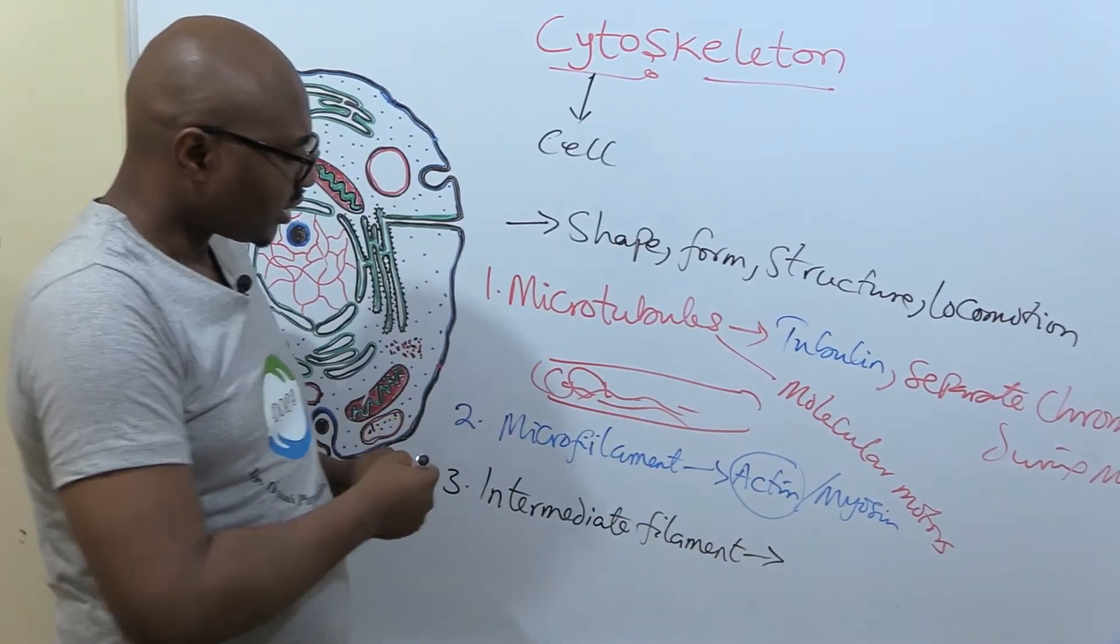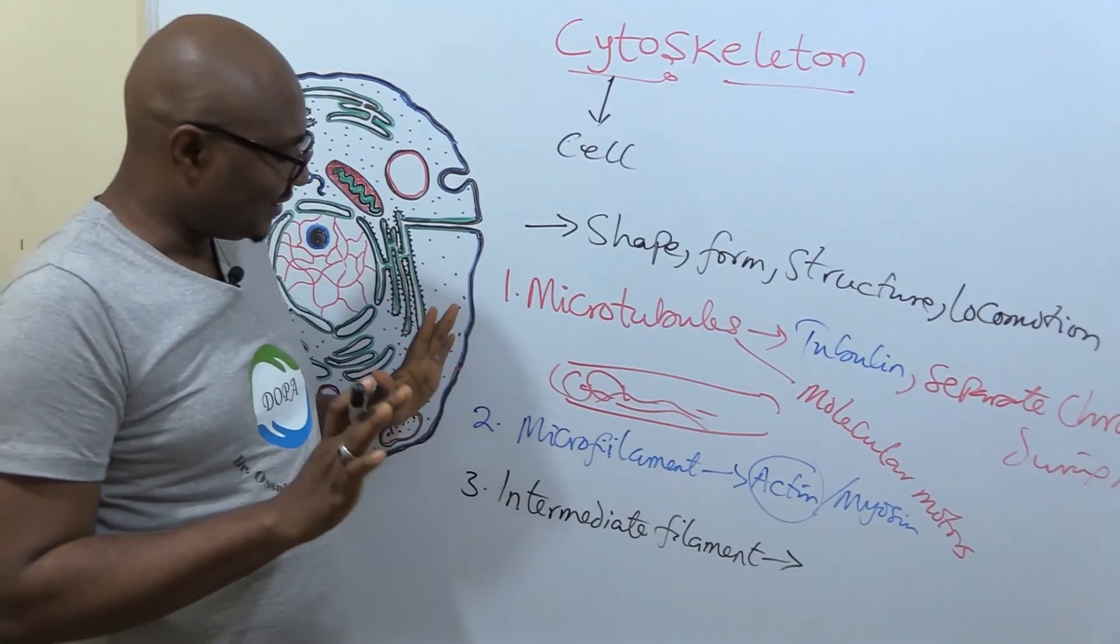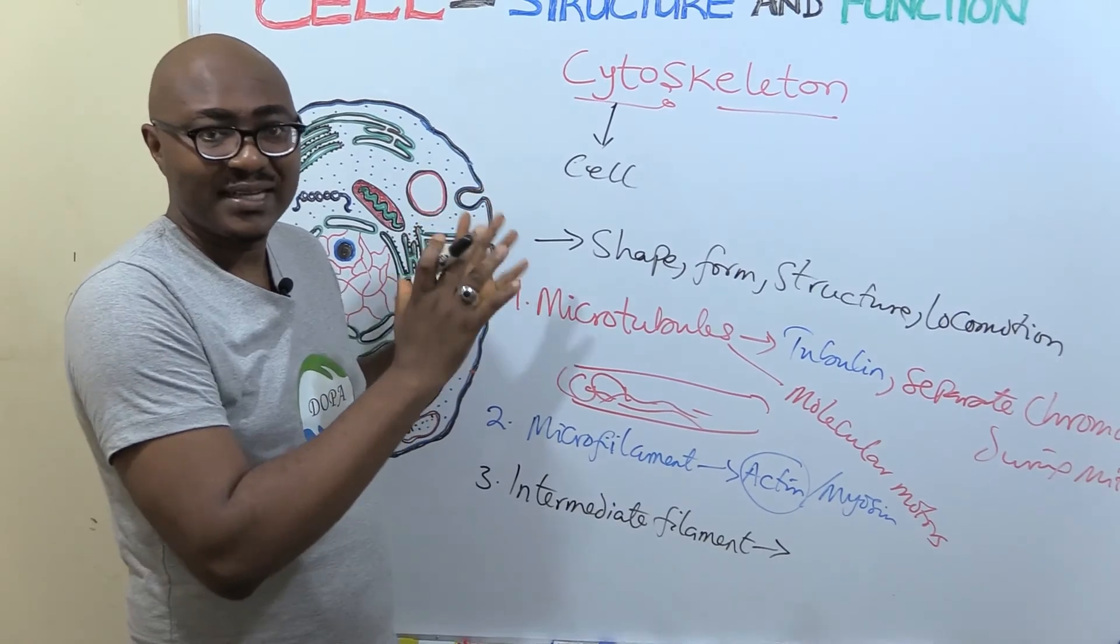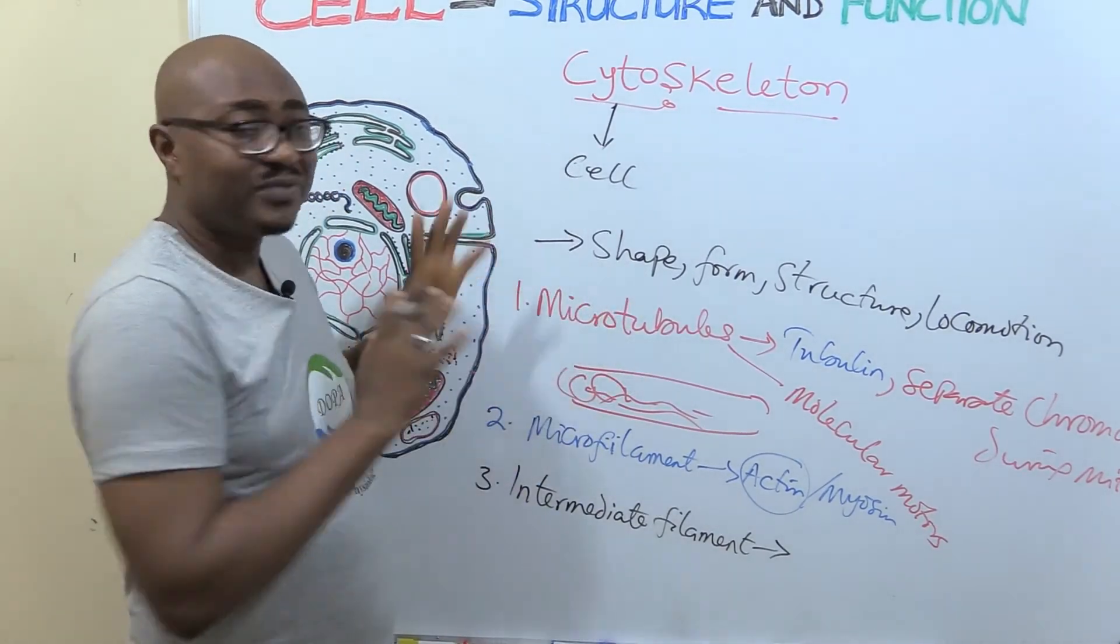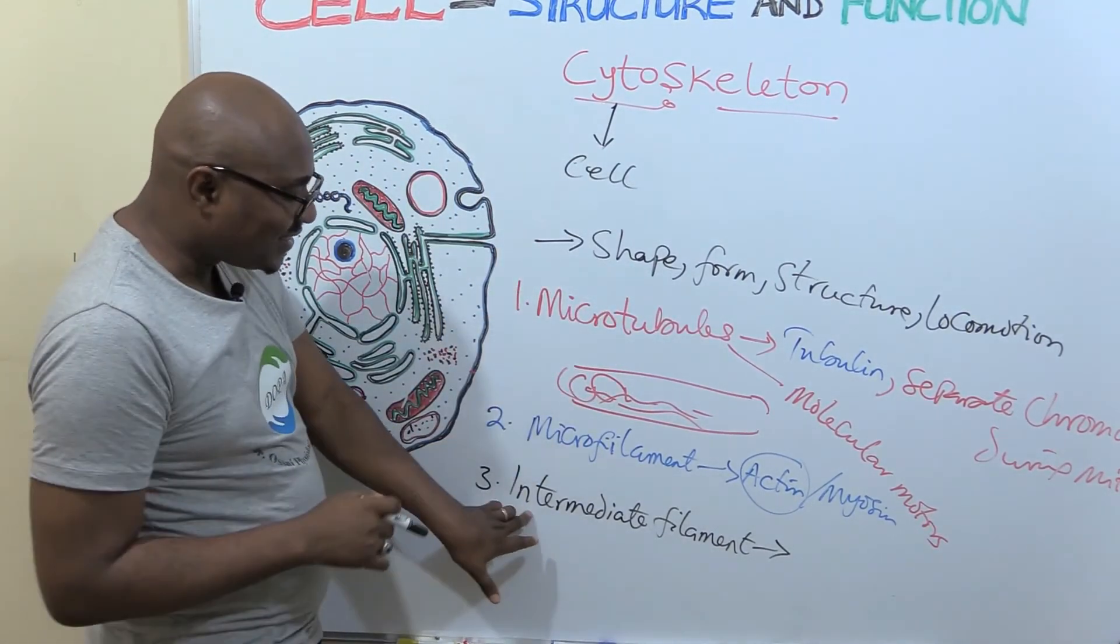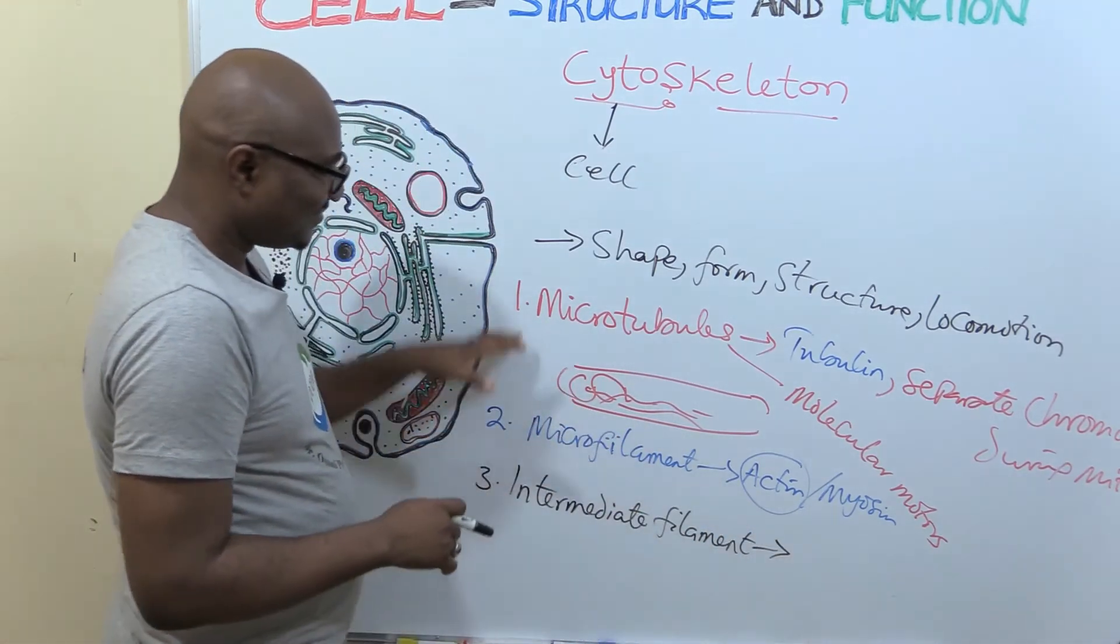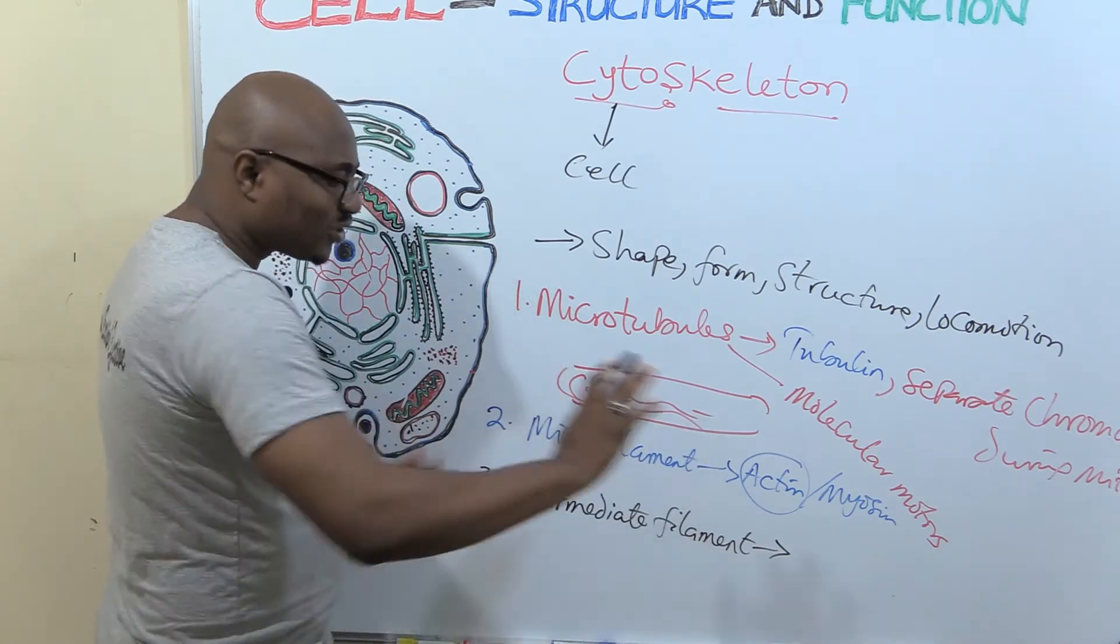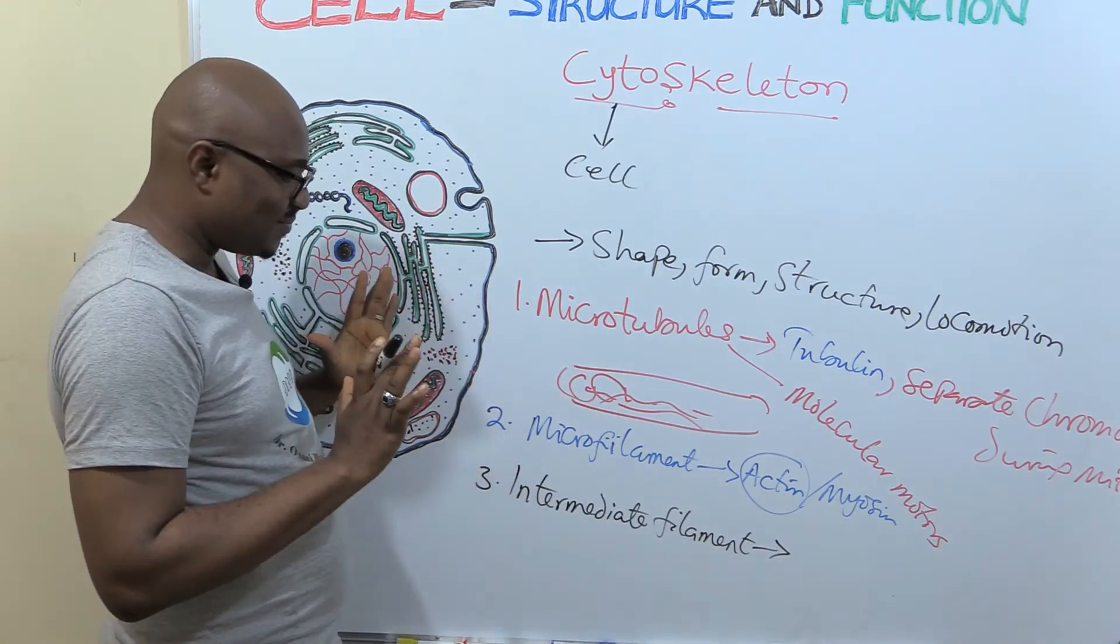This one is made up of so many different kinds of proteins. It's not a specific one, so we don't mention it. It's made up of different kinds of proteins. So they're actually the smallest of them, from the biggest to the smallest.